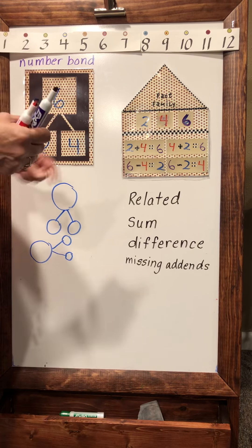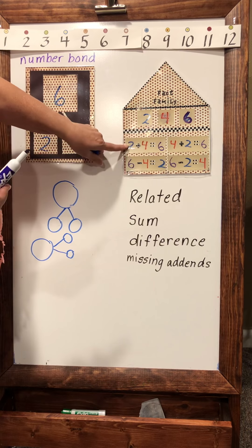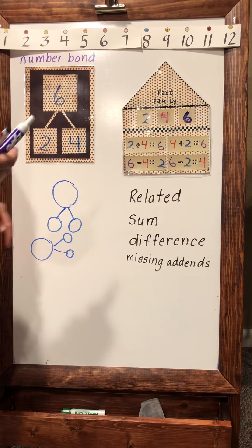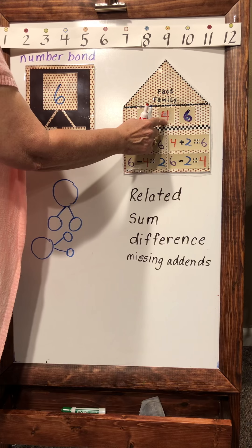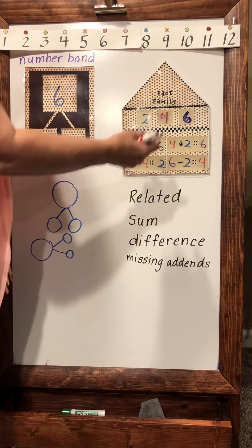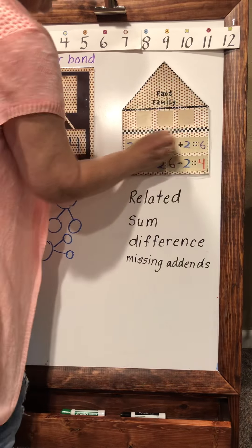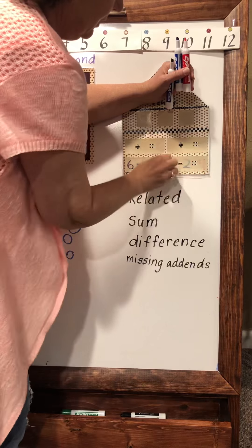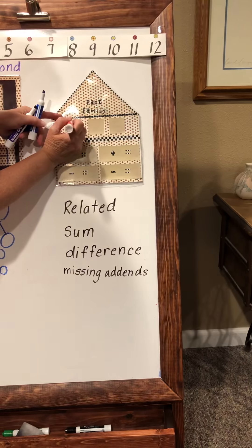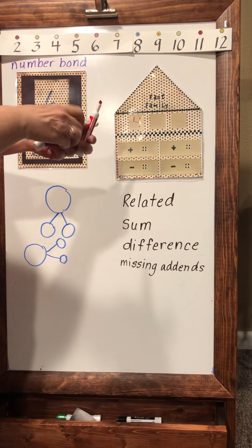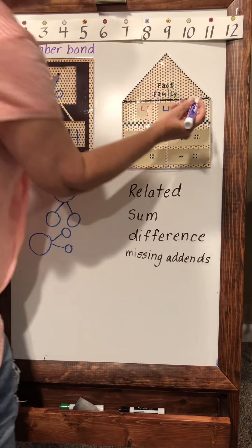The only time you would not fill out all four of these is if you have a doubles. That would mean that both of these numbers are the same number. Let me just give you an example of that, it's easier than trying to tell you without showing you. Let's say I wanted a four for one of my addends, another four for an addend, and then I'm going to put eight here.